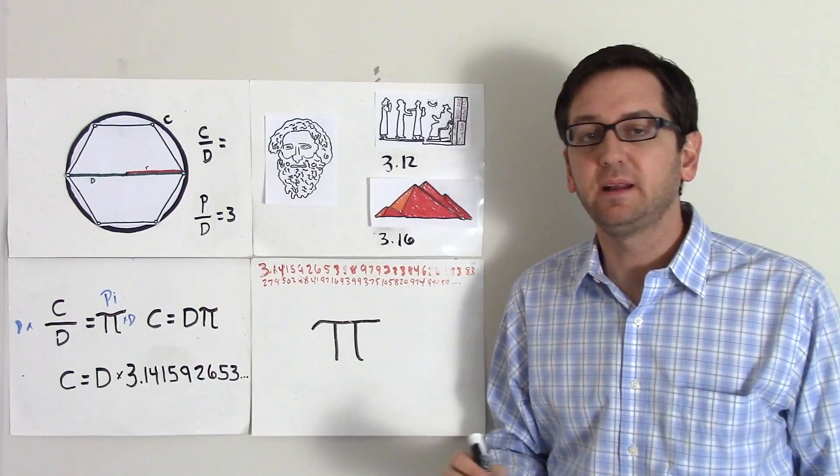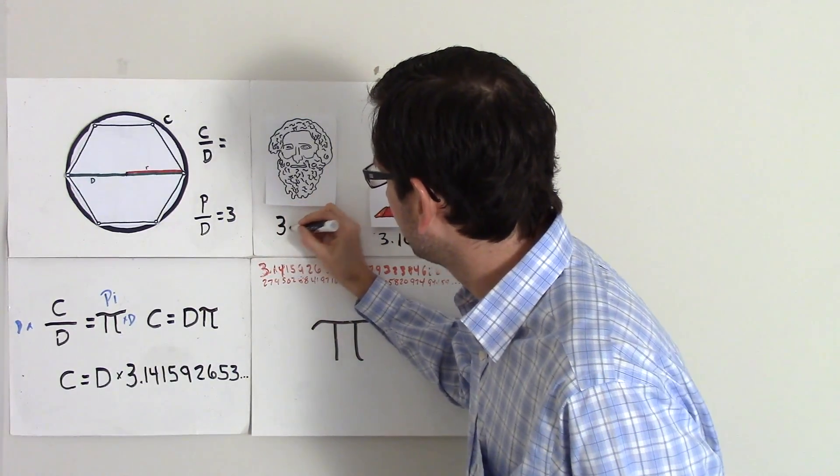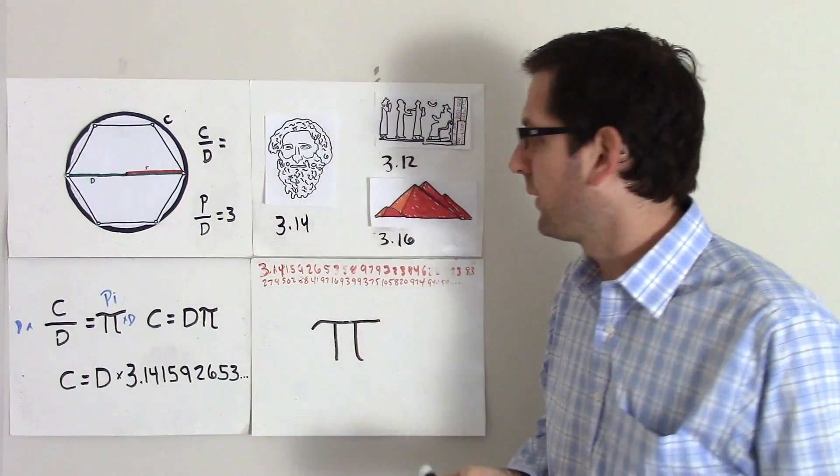And then finally Archimedes came in and said, well, I'm going to accurately approximate it at 3.14.